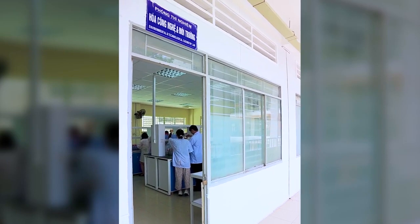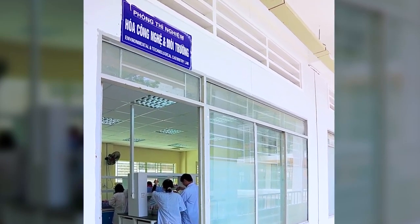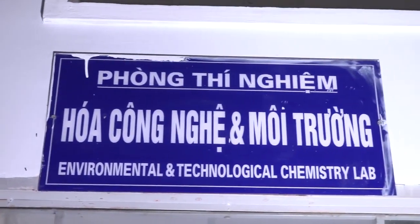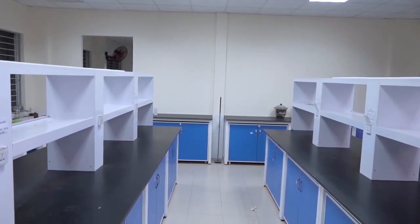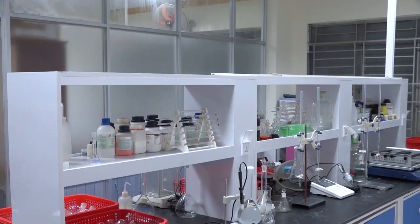The Environmental and Technological Chemistry Laboratory has an area of about 70 square meters and is divided into three main areas: a teaching room, a research room, and a work office for the staff of the Environmental and Technology Chemistry sub-department.